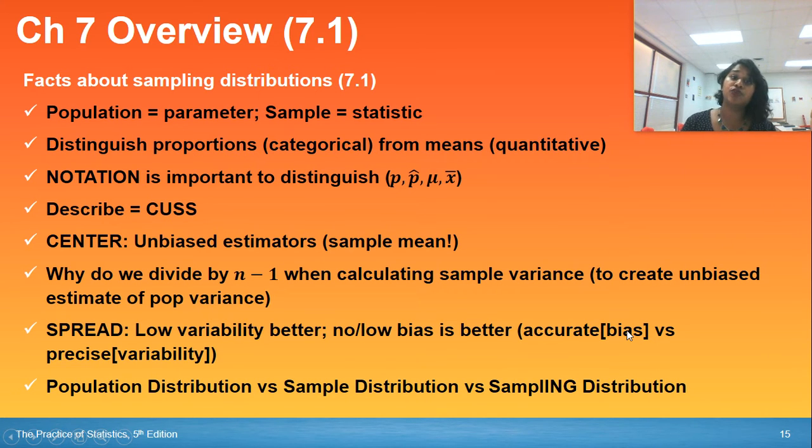When you're describing this, you can CUSS it out because it is quantitative one variable data. So you are allowed to use your center, your spread, and your shape. But for center, make sure you're checking, is it an unbiased estimator? You could ask yourself, why do we divide by N minus one when we calculate a sample's variance? And it's because you wanna create an unbiased estimate of the population variance.